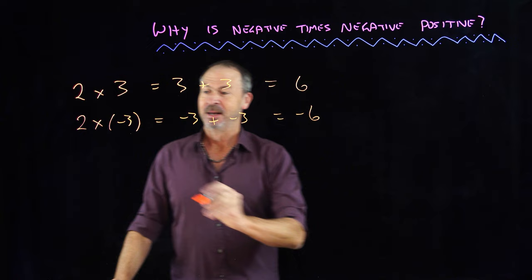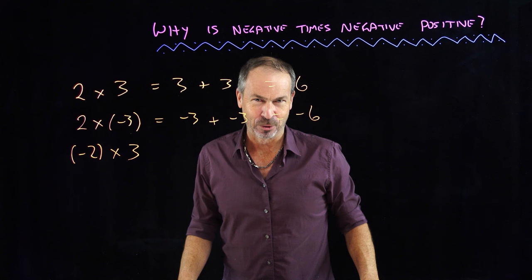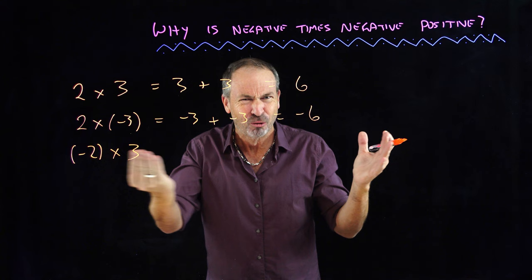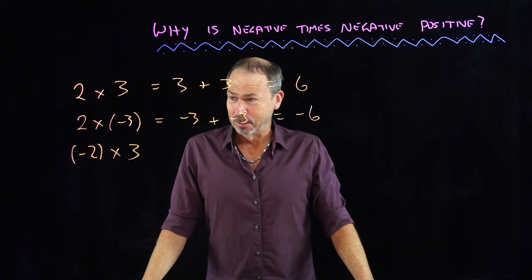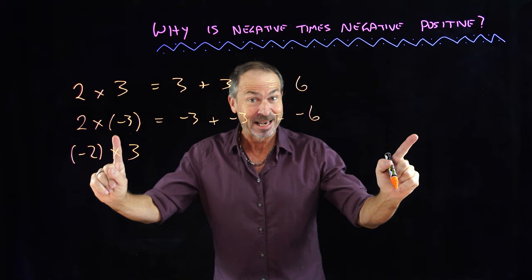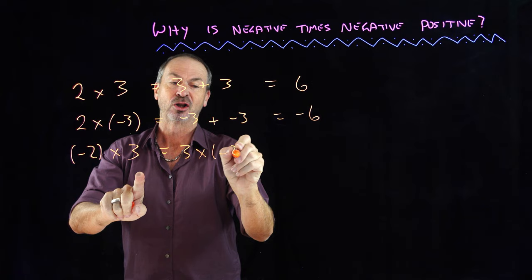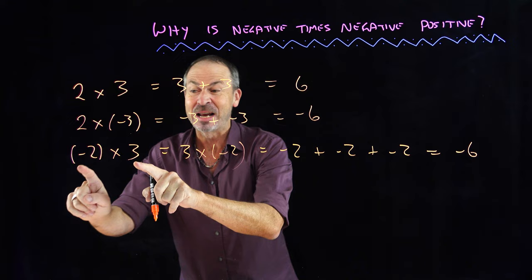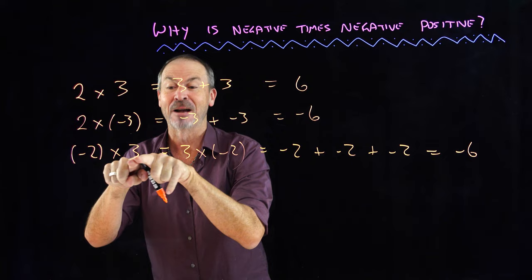Let's now do negative times positive — say, negative two times three. We're in a bit of a pickle, because if I try to interpret this as repeated addition, 'negative two groups of three' makes no sense. But most people say you can just switch the numbers around — multiplication works that way. If we switch it, this is really three times negative two: three groups of negative two, which is negative six. So if we believe multiplication is commutative for negative numbers, then negative times positive is also negative.